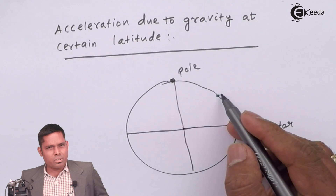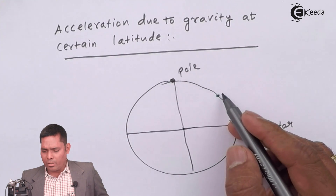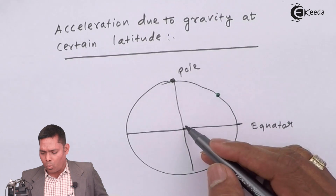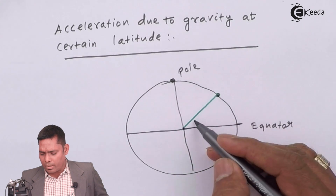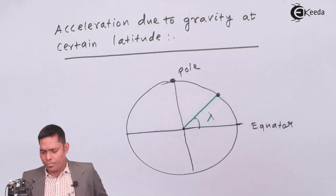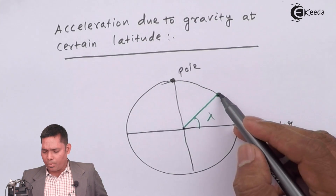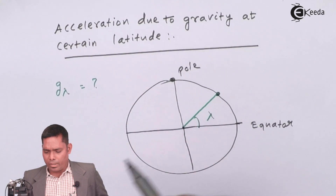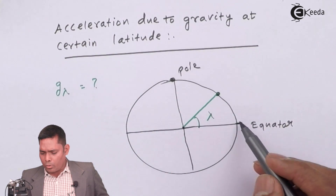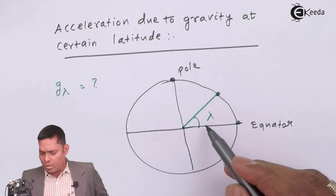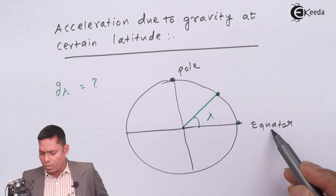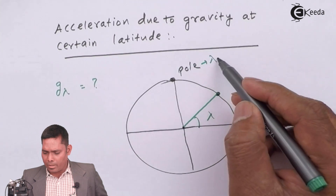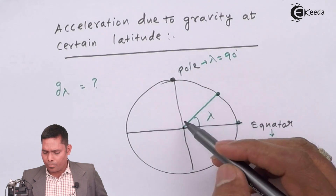We need to find the general expression for acceleration due to gravity at a certain latitude. Suppose this is the point on the globe where the latitude angle is lambda, and we have to find G at this point — that is G lambda. When the point is at the equator, lambda is 0, and for the pole, lambda is equal to 90 degrees.